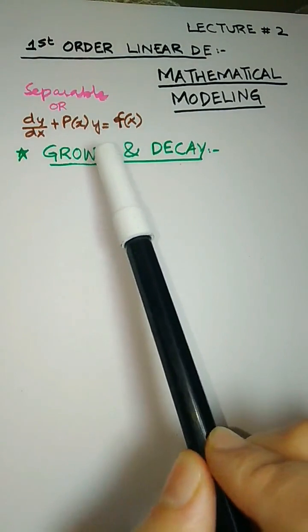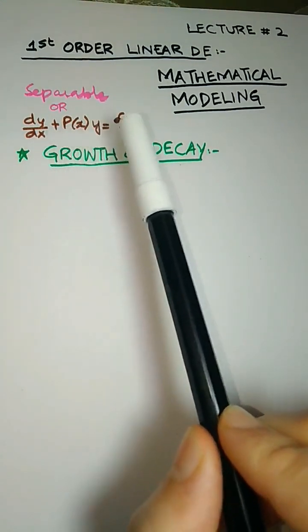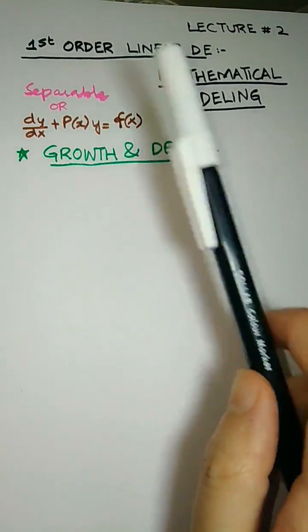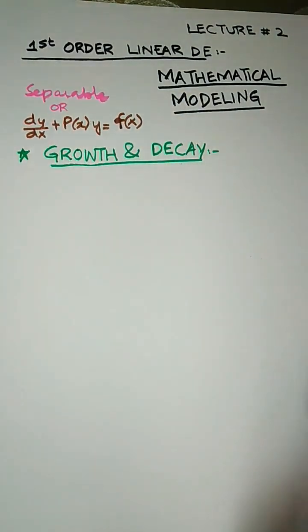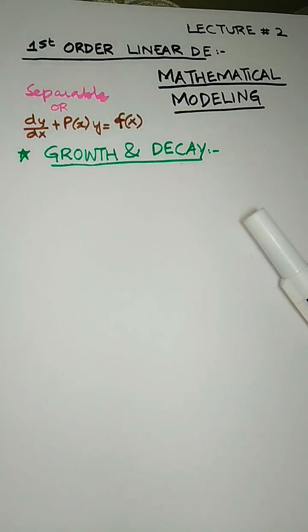The integrating factor is e to the power of the integral of P(x) dx. We multiply the integrating factor with the equation, and the left-hand side eventually becomes the expanded form of the product rule. We then transform that expanded form into compact form to get the solution of the first order linear differential equation.